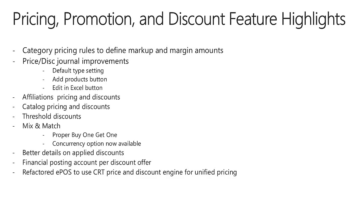We have also added the Products button to the window, and this allows you to find and add many products to the grid. We have also added an Edit in Excel button. This uses the Dynamics AX Office add-ins. You can take the journal and edit the lines in Excel and then bring those changes back into the journal. We bring additional information about the item into Excel so you can use these in the price calculation — for example, the base cost and the base sales price.